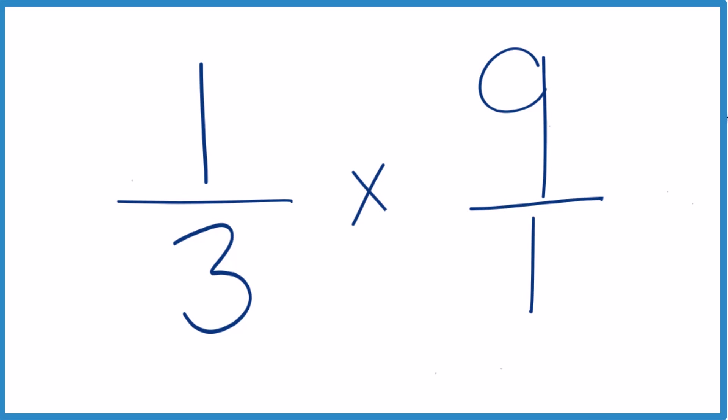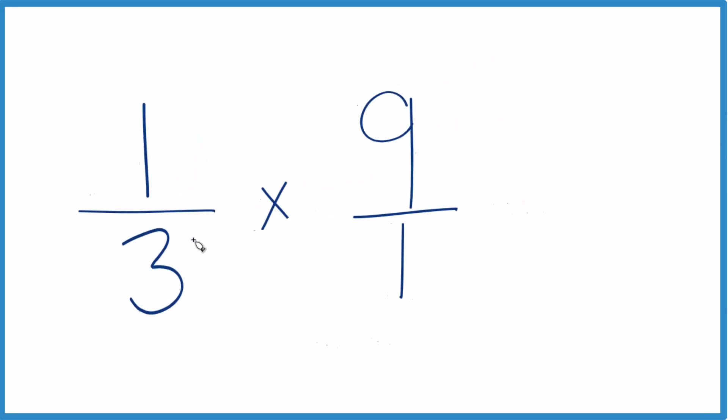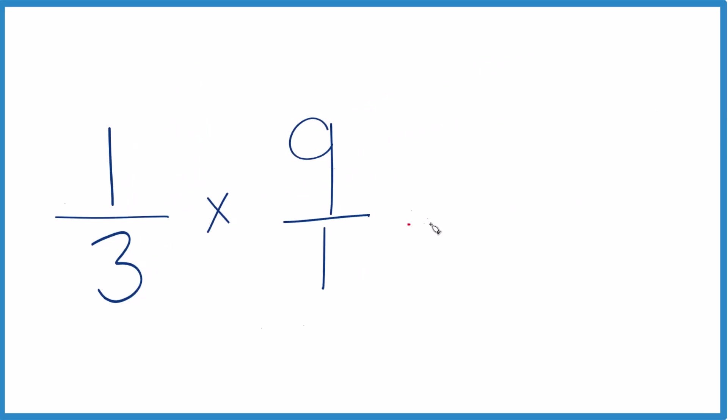Now the numerators line up and the denominators line up. So when we multiply fractions, we go one times nine, that would equal nine. And then three times one, that equals three.